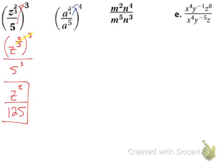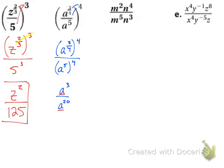The next one — same thing — I'm going to share that 4 between the top and the bottom. I get a to the 3/4 power to the 4th on top, and a to the 5th to the 4th on the bottom, both being taken to the 4th power. On the top I get a to the 3rd, because 3/4 times 4 gives me 3. On the bottom, 5 times 4 gives me a to the 20th. Since these are both a's I can divide: 3 minus 20 gives me negative 17. My answer always goes on the top, so I get a to the negative 17th, which simplifies to 1 over a to the 17th power.